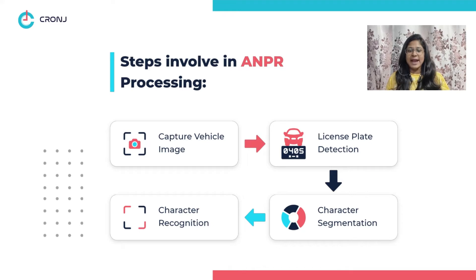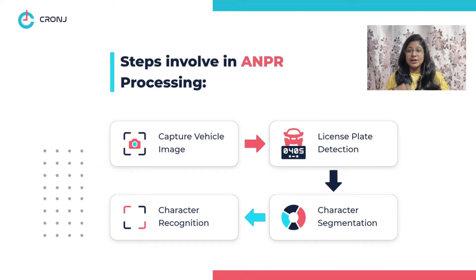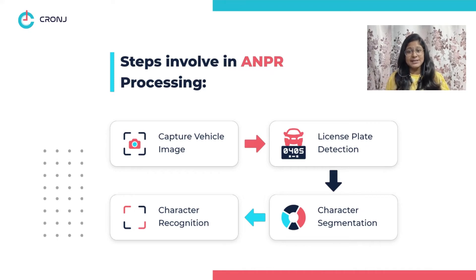Thirdly, depending on how the numbers are placed, the system uses a neural network for horizontal and vertical character segmentation. Lastly, the system uses feature extraction to transform data into descriptors and recognize the characters or vectors from the segmented image.